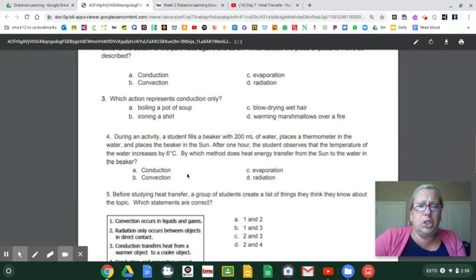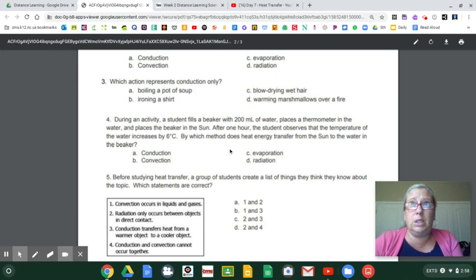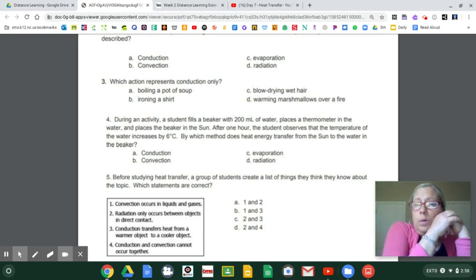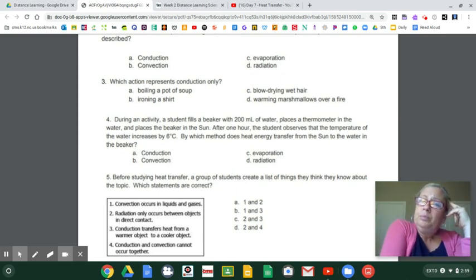Number three, which of the choices are conduction A, convection B, evaporation C, radiation D. Which action represents conduction only? So I know conduction is touch. A, boiling a pot of soup. Since soup is liquid, I think that's convection. Ironing a shirt, touch. Does the iron touch the shirt? Maybe. C, blow drying wet hair. So blow drying would be air and that would be more like convection. Warming marshmallows over a fire.